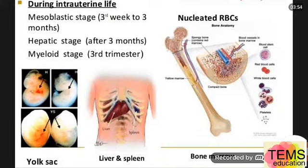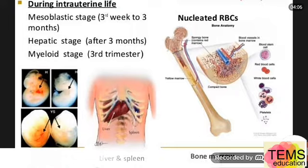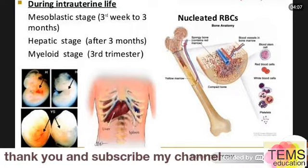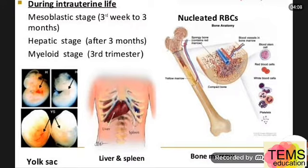After the age of twenty, RBCs are produced only by the membranous bones. This concludes our discussion about the site of erythropoiesis.